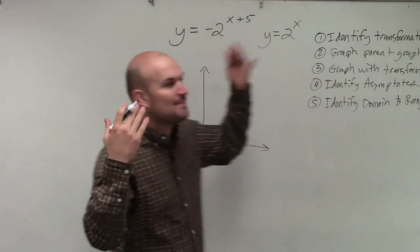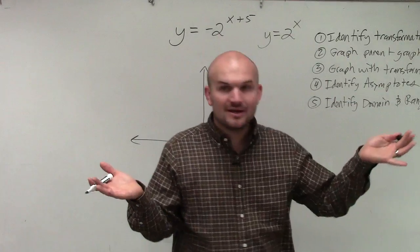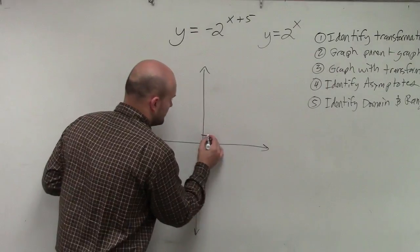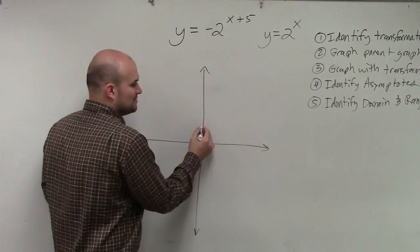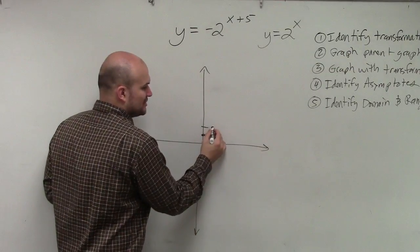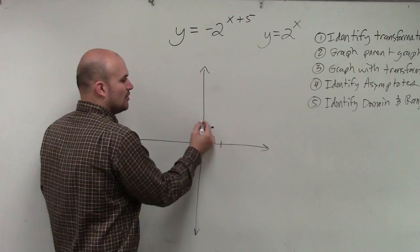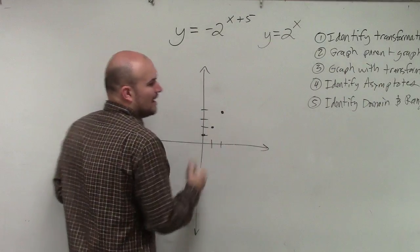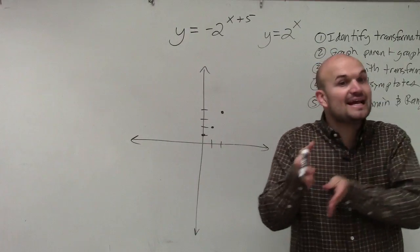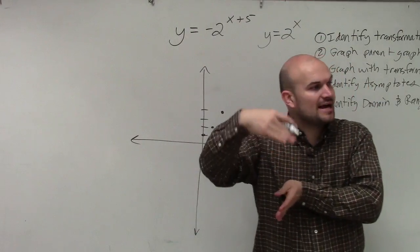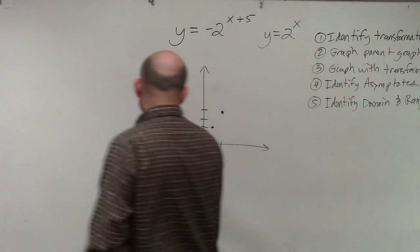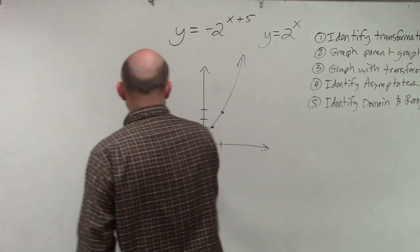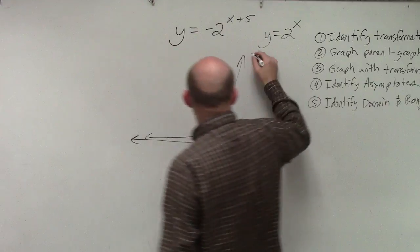So if we were to use a table of values, you could think of 2 to the 0 power, which would be 1. 2 to the first power would be 2. 2 to the second power would be 4. And then when we started doing negative numbers, that would actually make them fractions. So our graph looks something like this — that was the parent graph.